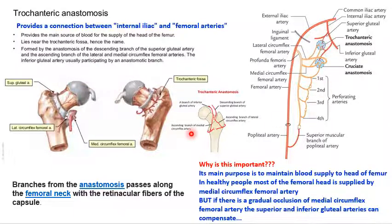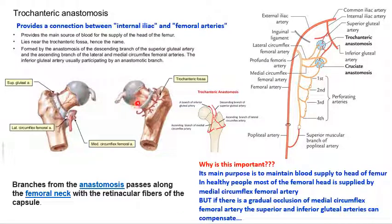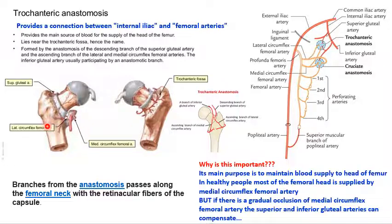These branches of the anastomosis pass along the neck of the femur as retinacular fibers along with the retinacular fibers of the capsule to supply the head and neck of the femur. The trochanteric anastomosis is important because it is the main source maintaining blood supply to the head of the femur. In healthy people, most of the femoral head is supplied by the medial circumflex femoral artery, with some contribution from the lateral circumflex femoral artery.